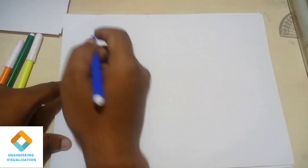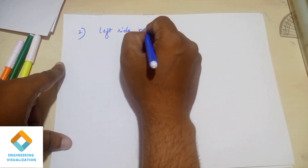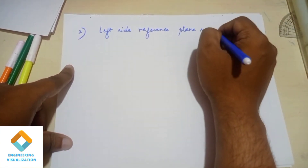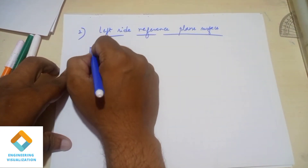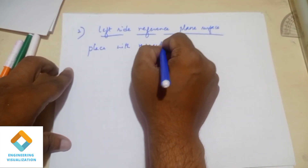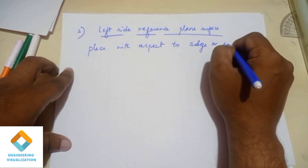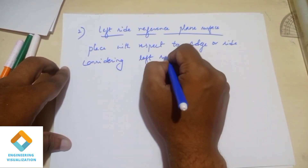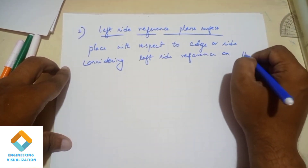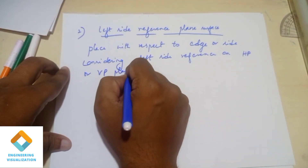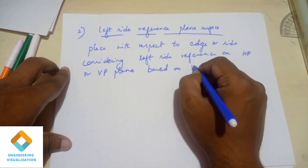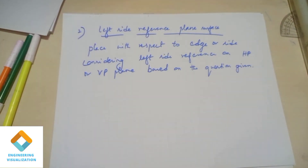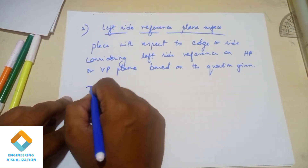Next, in projection of planes, the left-hand side reference is very important. We follow the planes with respect to edge and corner using the left-hand side reference. In order to place the plane - whether it is a triangle, square, or pentagon - use the left-hand side reference with respect to edge or with respect to corner. You have to decide based on the question.